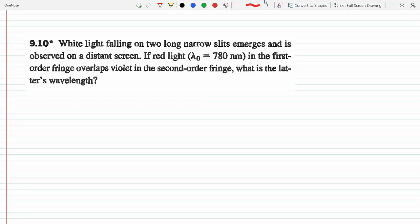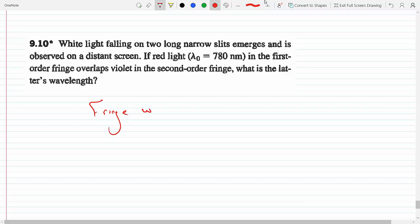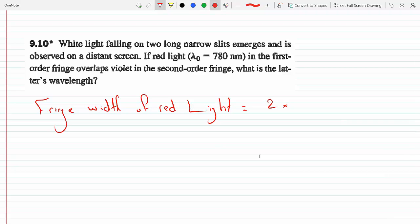So that means the fringe width of red light is actually twice the fringe width of violet light.